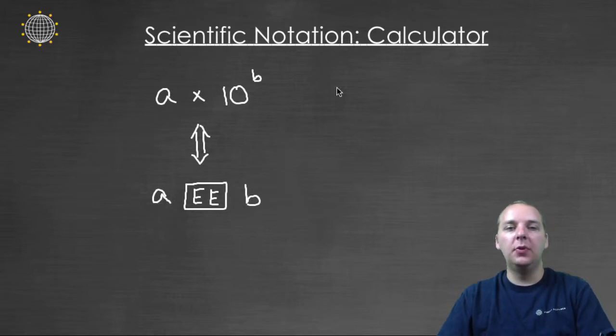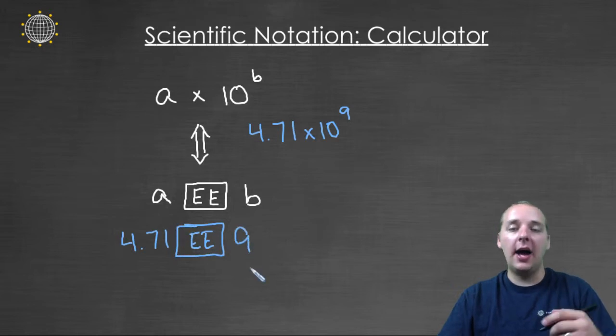So for instance if you wanted to do let's say four point seven one times ten to the ninth, then you would say four point seven one EE, you'll push this button which I'll show you in just a minute, nine, not raised to the ninth but just a nine, because this part right here is handling the entire times ten to the blank portion of the scientific notation.